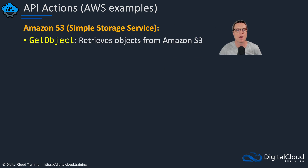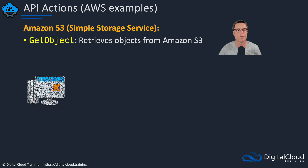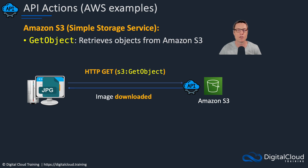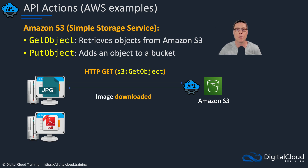With Amazon S3, we have the GetObject API action. You can imagine this results in an HTTP GET request, and it's used to retrieve objects from Amazon S3 — in other words, download a file from S3, which is basically a storage service. Through the Management Console we're issuing an HTTP GET — in AWS language that's an S3 GetObject request — and in response, an image is downloaded to the computer.